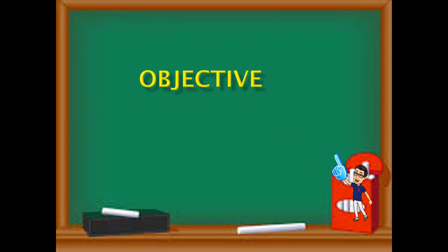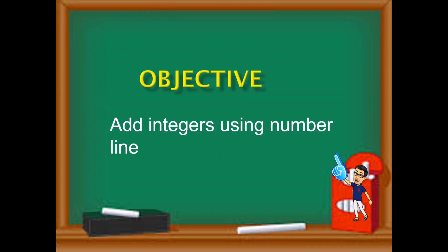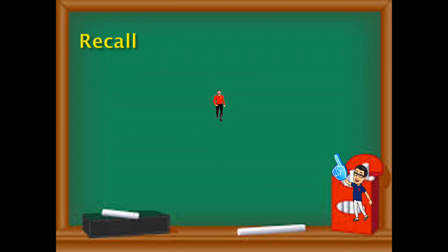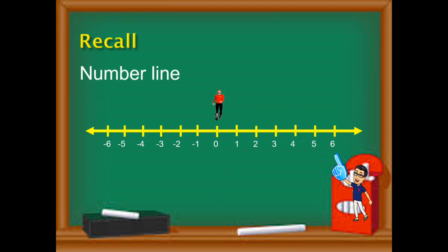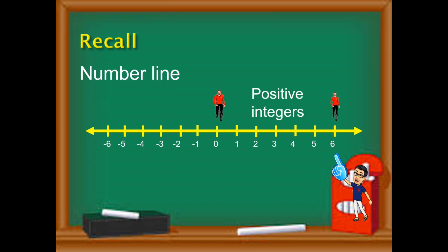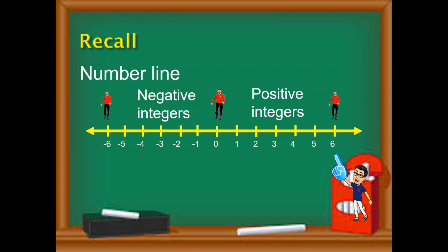The objective of this presentation is to add integers using the number line. Recall that the number line is composed of the following: first, there must be zero. Going to the right side gives the positive integers, and on the other side — the left — are the negative integers. So you need to draw a line, mark zero, with positive integers at the right and negative integers at the left.